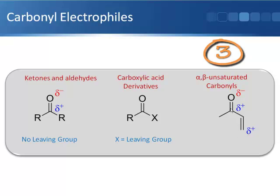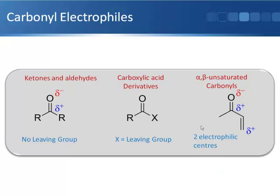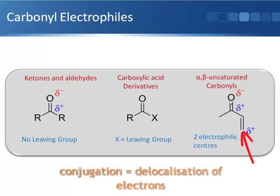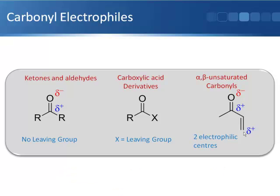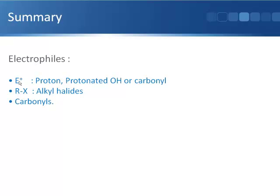The third important type of carbonyl is the alpha-beta unsaturated carbonyl compound, where a double bond is conjugated to the carbonyl double bond. These are really interesting because there are two electrophilic centers in the molecule — you can either get nucleophilic addition to the carbonyl carbon, or to the beta carbon, because conjugation to the carbonyl group means that carbon can also feel the pull of the electronegative oxygen, making it electron-poor and therefore electrophilic. To summarize: the important electrophiles are positively charged species, which are strong electrophiles; alkyl halides (RX), which are quite mild; and carbonyls, which are also quite mild.